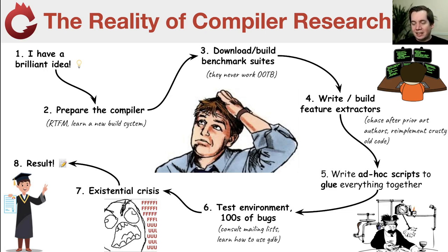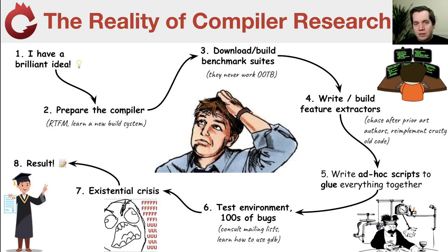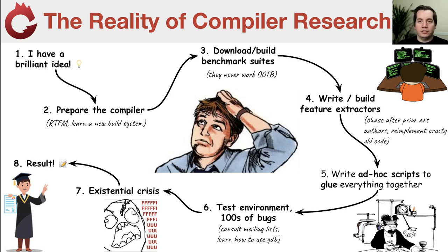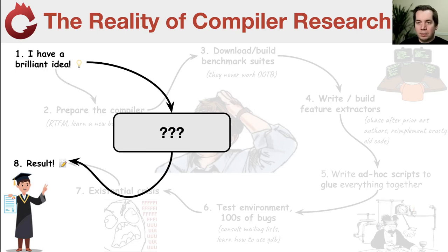In other domains like natural language modeling or image recognition, there are pre-packaged datasets, models, frameworks, and libraries that let you go much more quickly from idea to result through rapid iteration. But these don't exist for the compiler research community. So we started to think: what if we could build that missing piece of infrastructure? That's what we have done with CompilerGym.